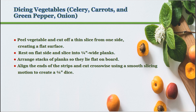Method for dicing vegetables: peel the vegetable and cut off a thin slice from one side, creating a flat surface. Rest it on the flat side and slice into one-fourth inch wide planks. Arrange stacks of planks so they lie flat on the board, align the ends of the strips, and cut crosswise using a smooth slicing motion to create a one-quarter dice.